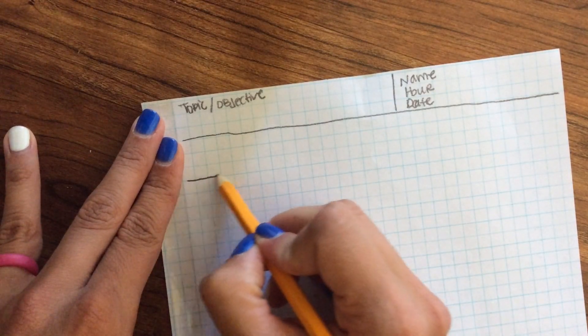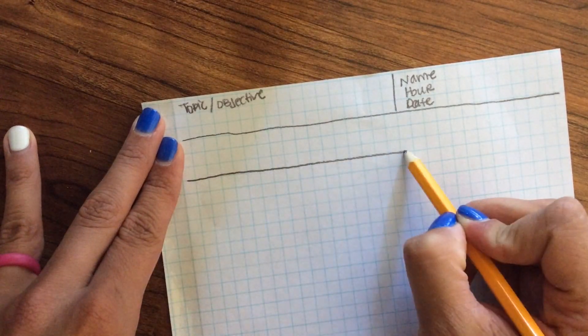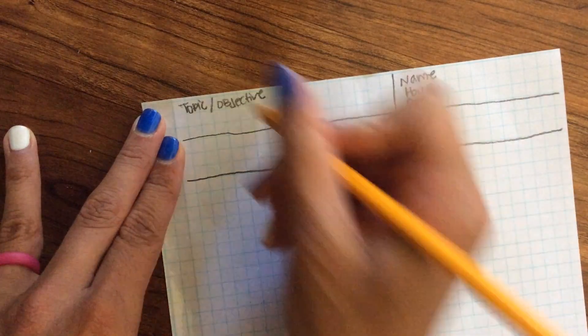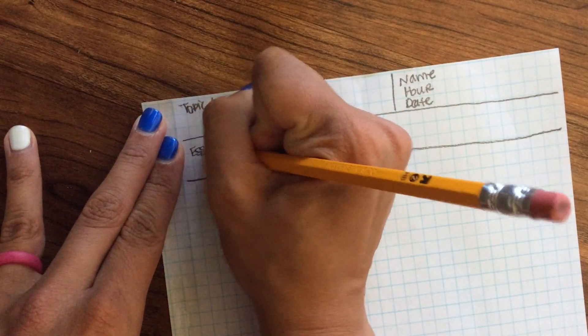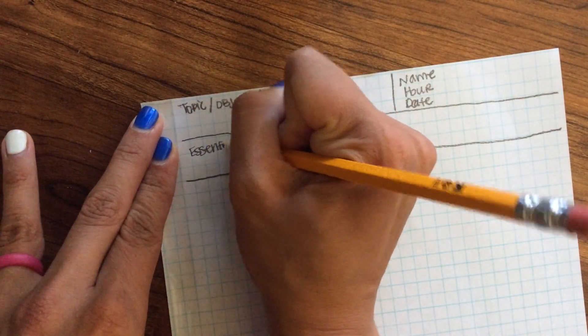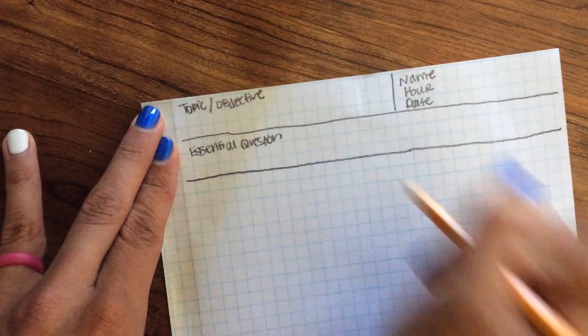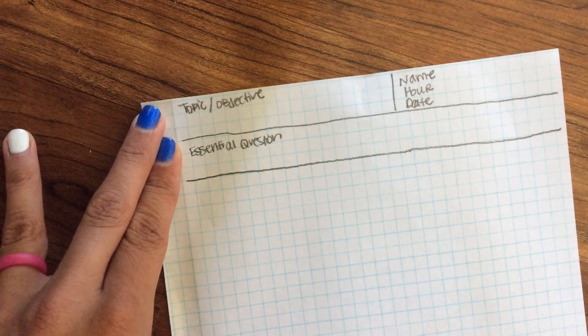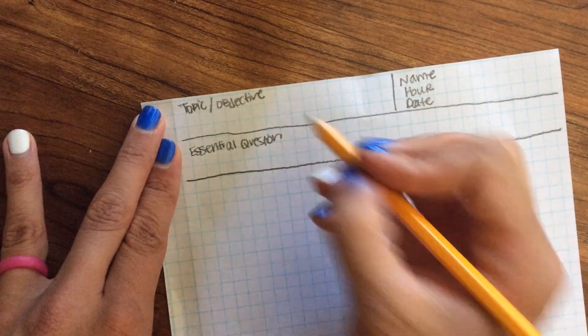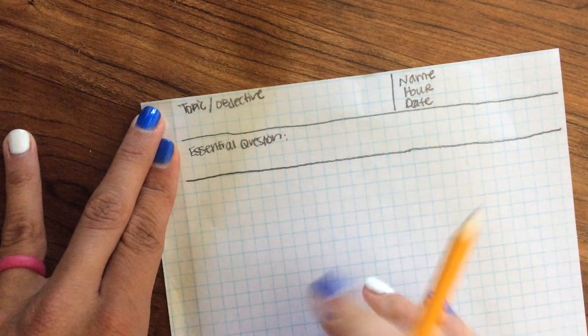Then I am going to make another one about an inch down. This is where my essential question is going to be. Your essential question is something that your teacher is going to give you. And this is really your purpose for taking notes or your purpose for reading. So again, that's where my essential question is going to go and your teacher should give this to you in the form of a question.